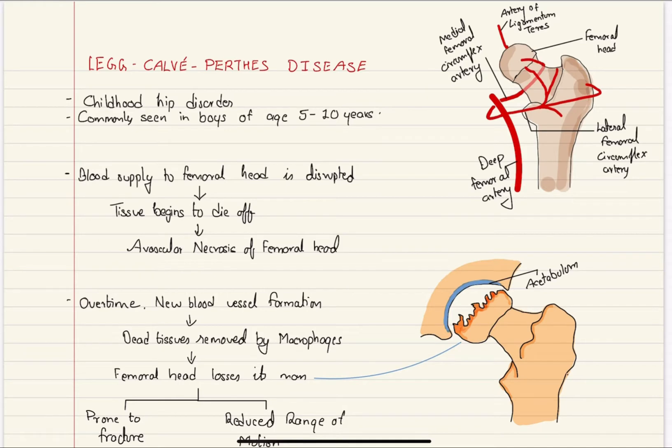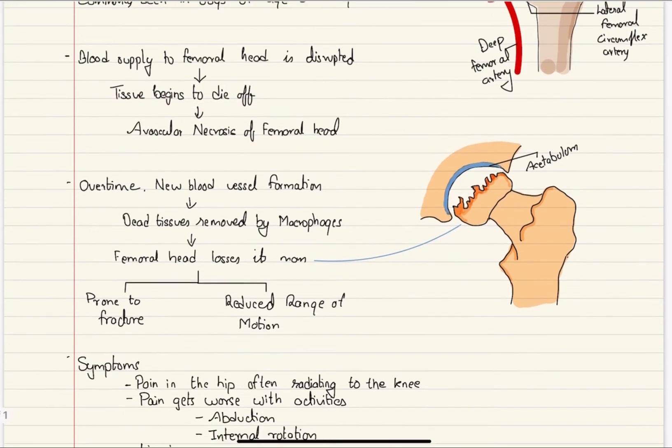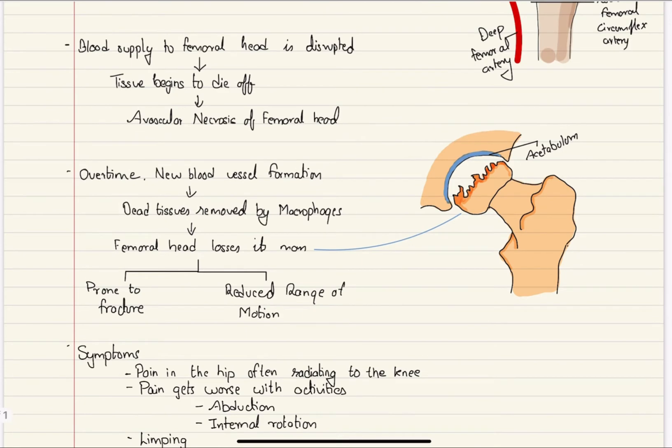Disrupted blood supply to the head of the femur causes the tissue to die off, leading to avascular necrosis of the femoral head. Over time, new blood vessel formation allows dead tissues to be removed by macrophages. Due to this, the femoral head loses its mass, which can be appreciated in this picture. As the femoral head loses mass, it becomes prone to fracture, and there is reduced range of motion. The hip joint is normally a ball-and-socket joint with great mobility, but in this disease, it is greatly reduced.